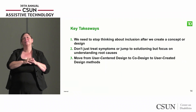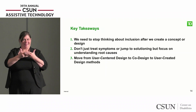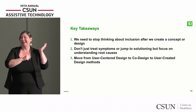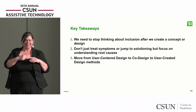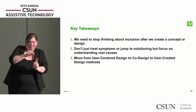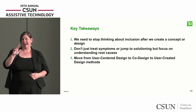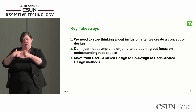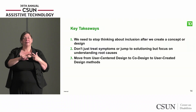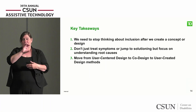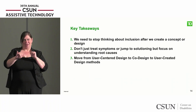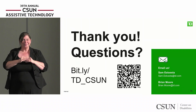If there are only three things you take away from our conversation today: first, we need to stop thinking about inclusion after we create a concept or design. Second, we don't need to just treat symptoms or jump to solutioning, but focus on understanding root causes — in the Tamarack example, we actually did a full year of deep listening before any solutioning or ideation, because we wanted to spend time really understanding the problem space. And the last thing is to move from user-centered design to co-design to user-created design — having individuals not only on your teams but actually building solutions for their own communities.